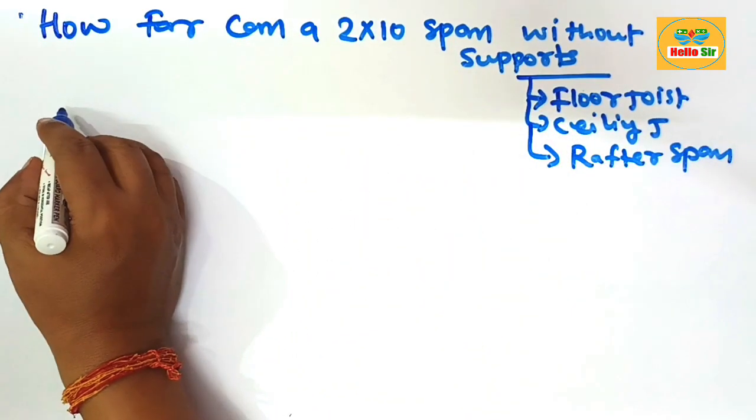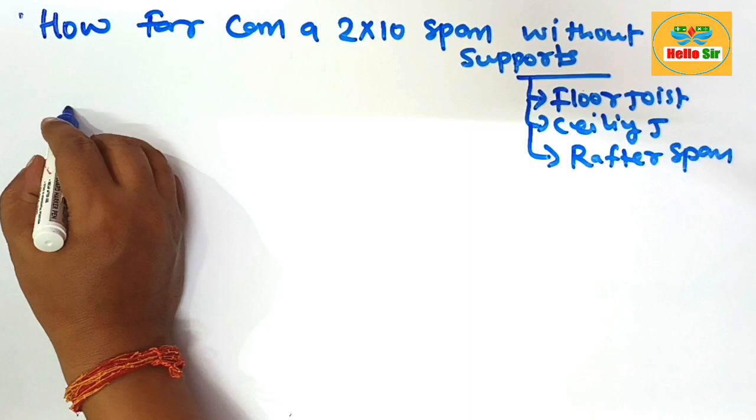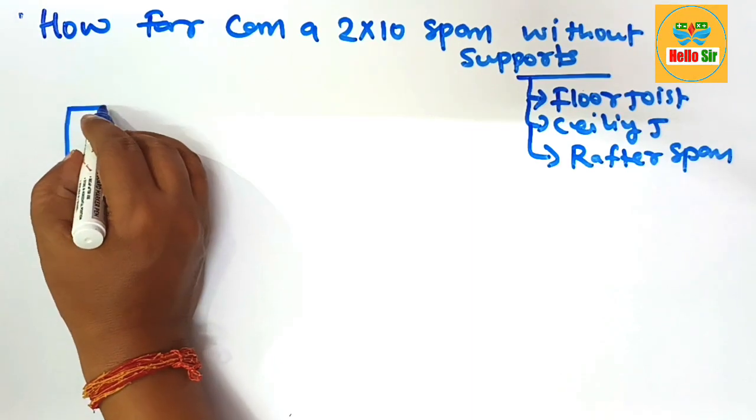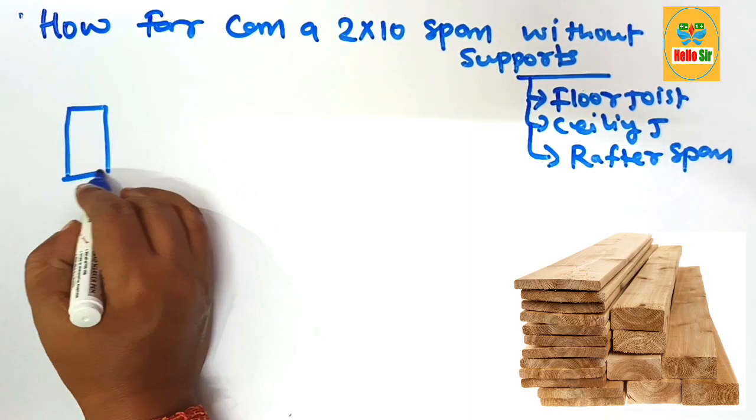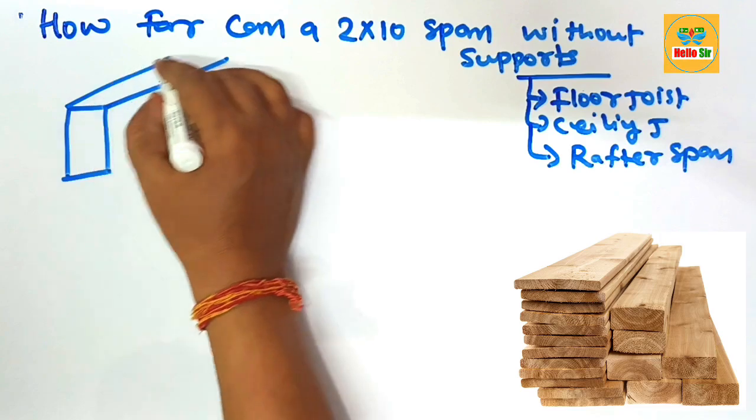First, here we make a rough diagram to understand about the dimensions for the 2 by 10 dimensional lumber. This is a rough diagram.